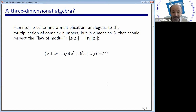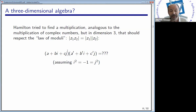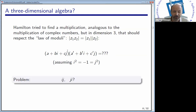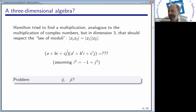He tried, and what he did was: we have already the first two dimensions, A plus Bi. He added a new imaginary unit J and decided that J squared should be minus one, exactly as I. Then the question is how to multiply these elements. We know i squared is minus one and we have imposed j squared is minus one. Now the question is what IJ and JI look like. This was the problem, and he tried for many years.